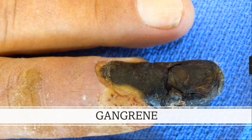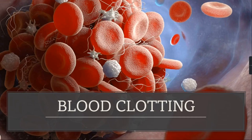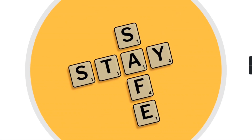Another symptom is gangrene, which is the death of body tissue as seen in the picture shown. The next symptom is blood clotting. These are symptoms which can be seen even in symptomatic persons. This is the information collected from various sources.